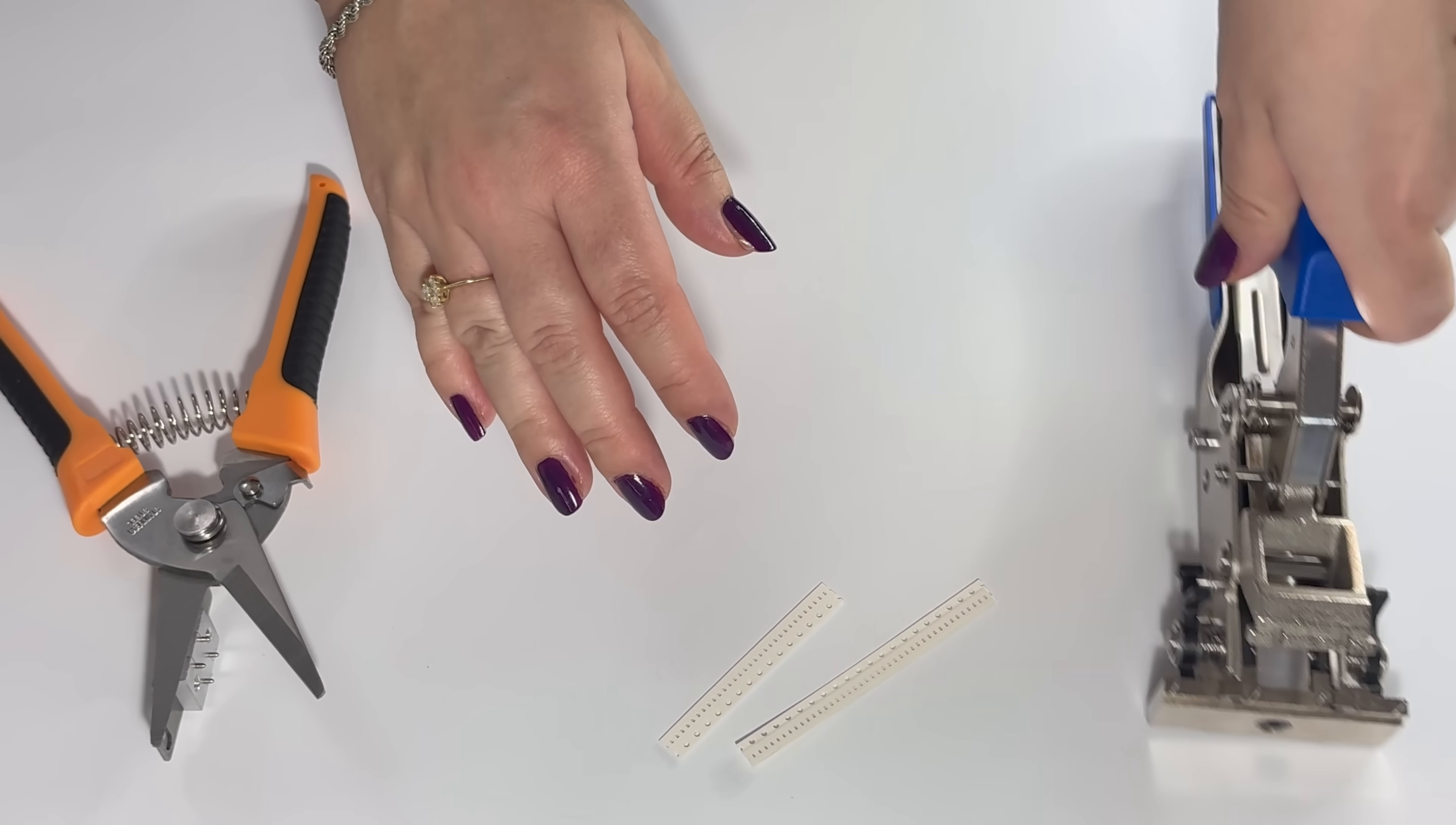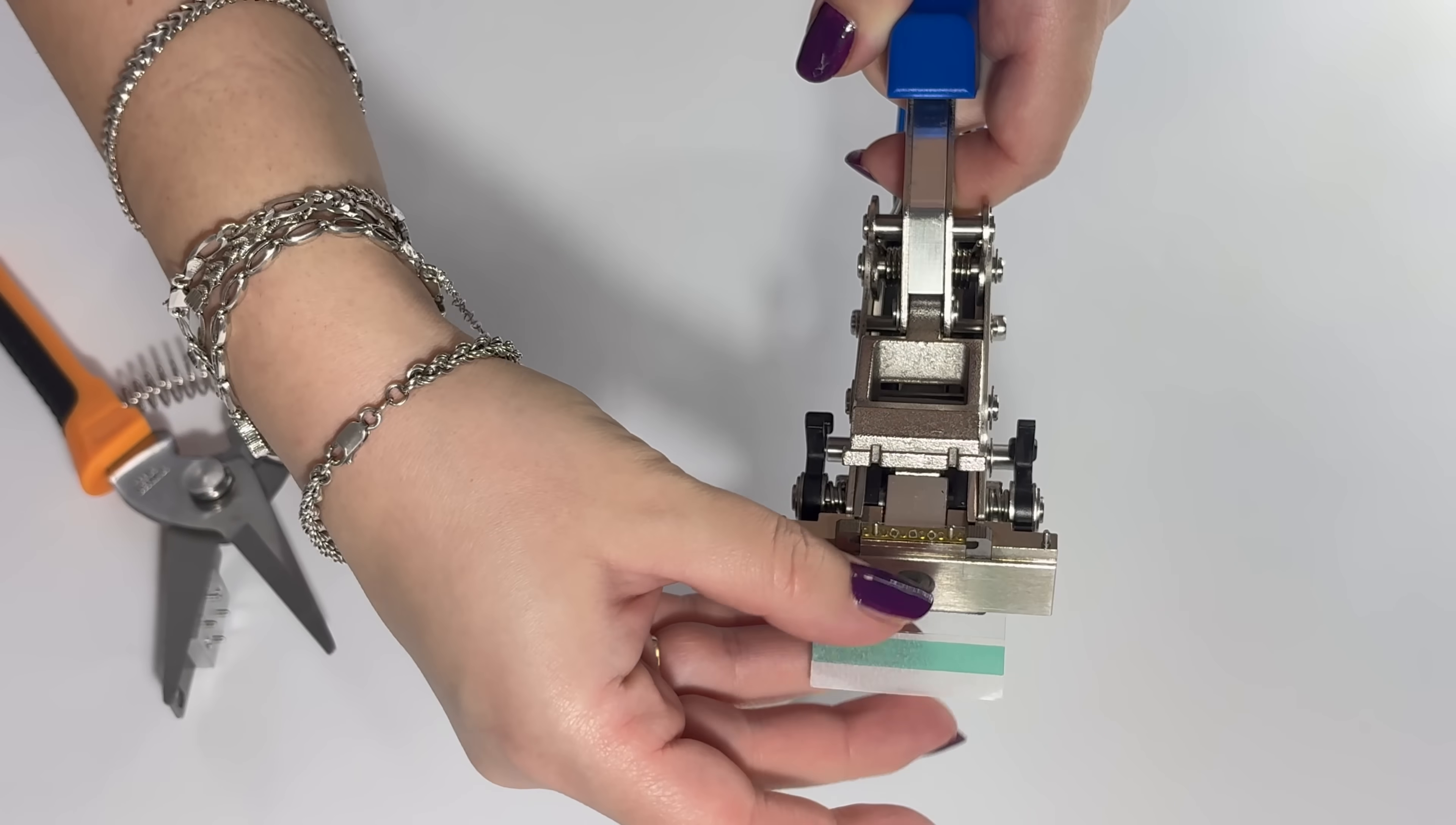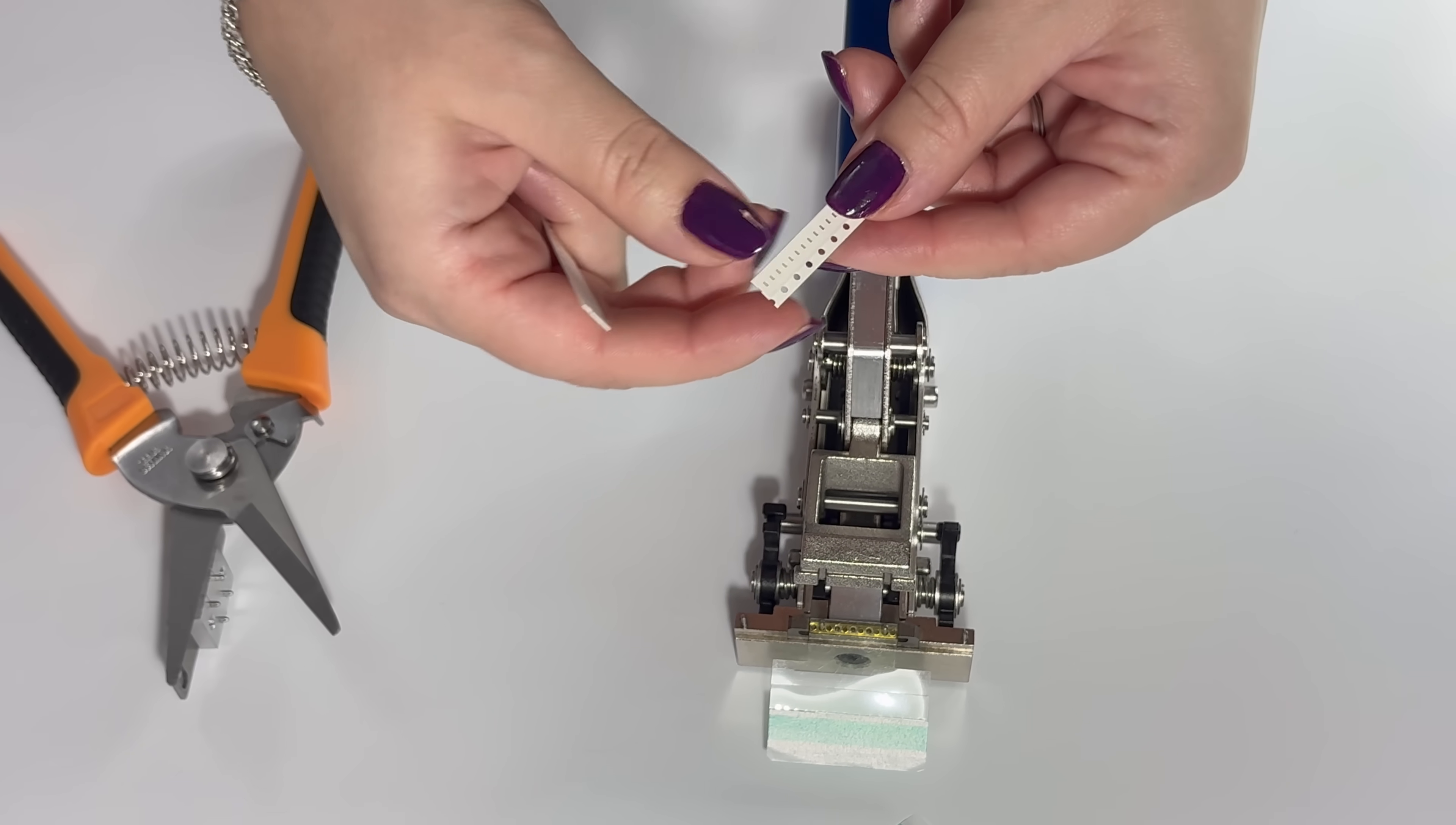And then we're going to take our splice and put it in our splicing tool. And also add our tape in halfway through on both ends and fold the clips to hold it.